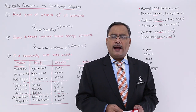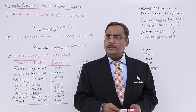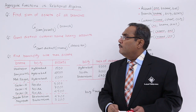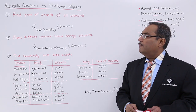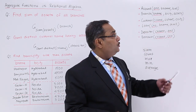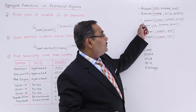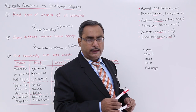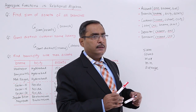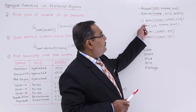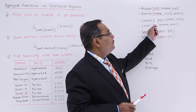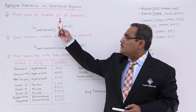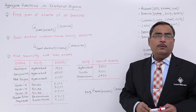Let us discuss aggregate functions and their usage using some examples. Query number one: find the sum of assets of all branches. For the branch relation, capital B denotes the schema and lowercase b denotes the relation. The branch schema has attributes: branch name, branch city, and assets. So here it has been asked to find the sum of the assets of all branches.